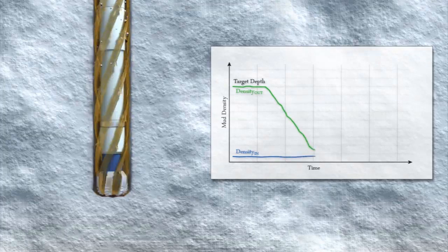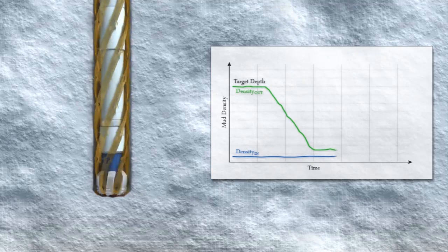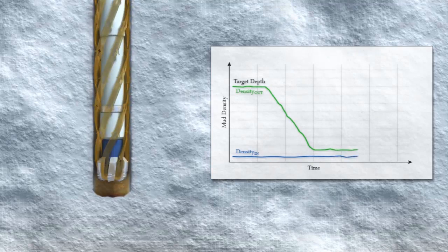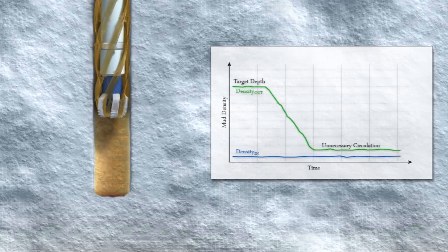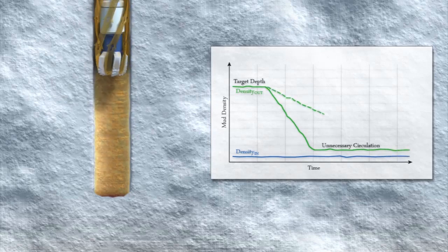It's also possible to accurately quantify if circulating more than bottoms up is necessary or not, removing unnecessary circulating time, or providing an indication of sloughing due to poor cuttings transport.